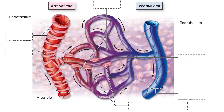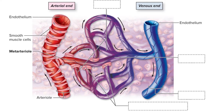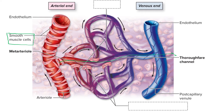A capillary bed is fed by a metarteriole — 'meta' meaning in between — which is a branch of the arteriole, the smallest of the arteries. The proximal part of the metarteriole is encircled by scattered smooth muscle cells, whereas the distal part is called the thoroughfare channel, which allows passage through the bed and has no smooth muscle cells. The thoroughfare channel connects to a post-capillary venule, the smallest of the veins, which drains the capillary bed.